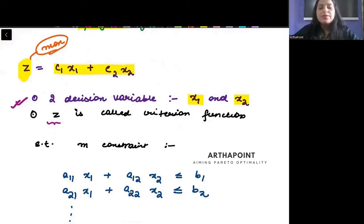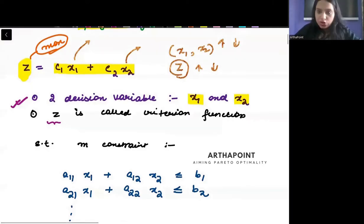This z can be called as an objective function and this z can also in linear programming language be called as a criteria function. So z is an objective function or a criteria function and it is written as c1 x1 plus c2 x2. So from here, if you can see, suppose I want to maximize z. As you can clearly see, there are two decision variables that are involved in this equation. The first decision variable that I have is x1 and the second decision variable that I have is x2. As x1 and x2 will vary, accordingly the value of z will vary.